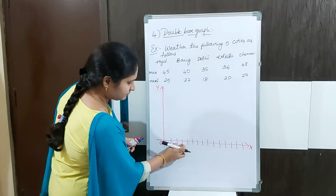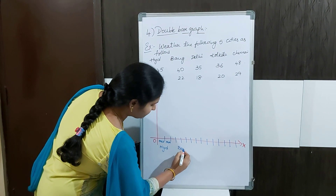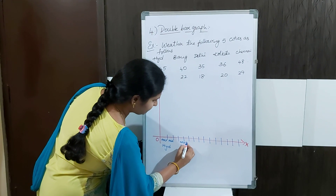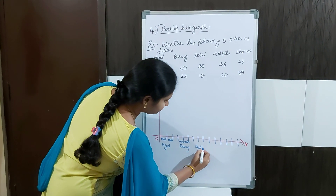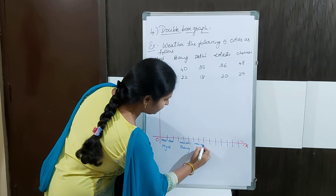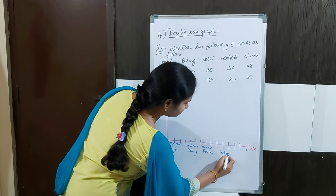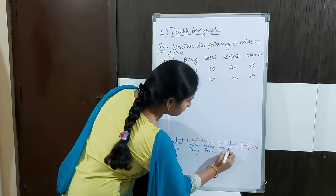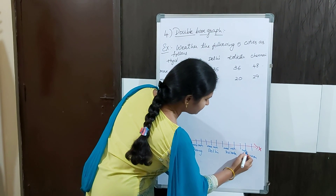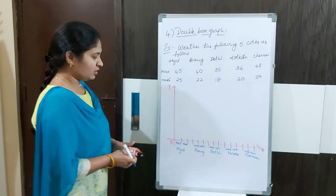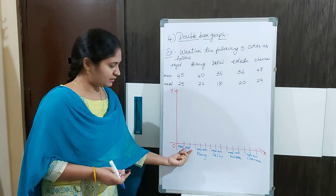You can leave one unit and then continue with the next city, Bangalore — maximum and minimum. Leave one unit and then the next city is Delhi — maximum and minimum. Leave one unit and then Kolkata — max and minimum. Then leave one box and the next one is Chennai — max and minimum temperature. On the horizontal axis I am taking the cities, with maximum and minimum bars for each.